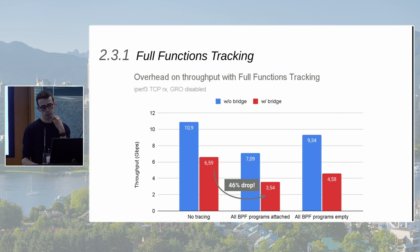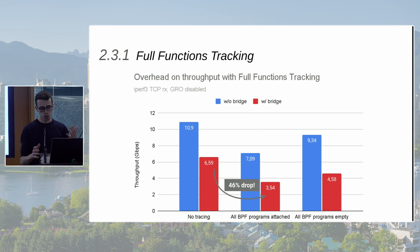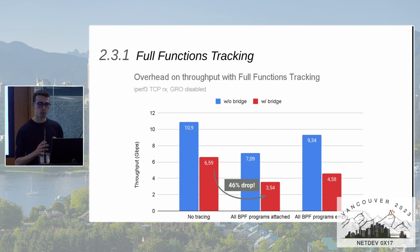For full functions tracking performance, this graph shows a HiPerf3 TCP receive test with Netto loaded on the receiver, conducted with Generic Receive Offload disabled to stress the system and make CPU the bottleneck. Results are shown for two configurations: blue bars with no bridging, and red where the receiving interface is part of a bridge. When Netto is loaded, performance can drop worst case by as much as 46 percent — meaning instrumentation cost is almost as high as the entire rest of the network stack.